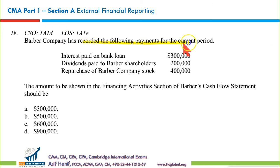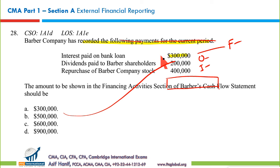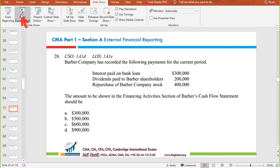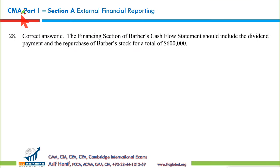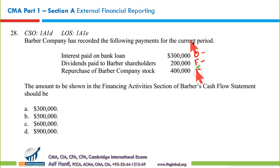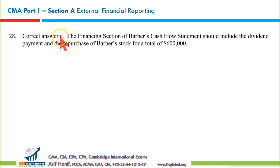Question 27: Barber's Company payments include: interest paid (operating outflow), dividends paid to shareholders (financing outflow), and repurchase of company's own stock — treasury stock (financing outflow). The question asks for total financing outflows. Dividends paid plus treasury stock repurchase totals $600,000 — making C the correct option.